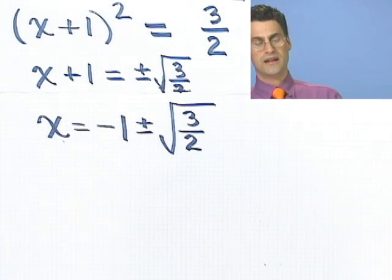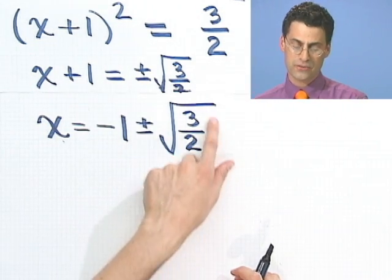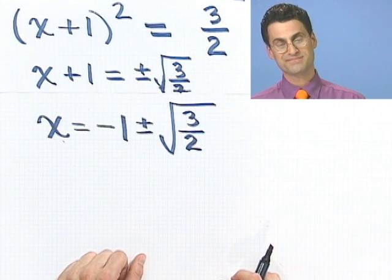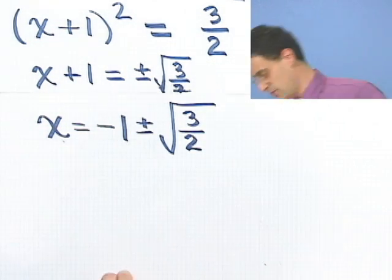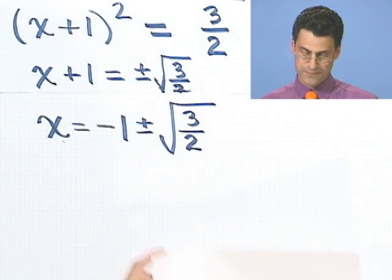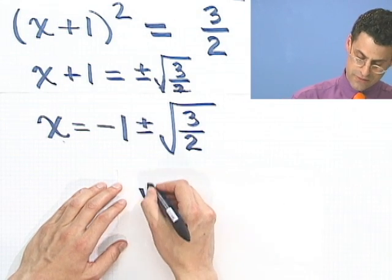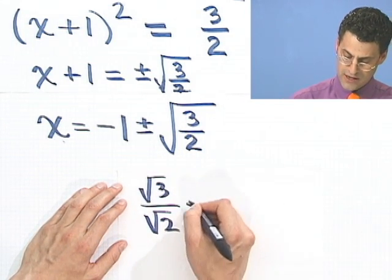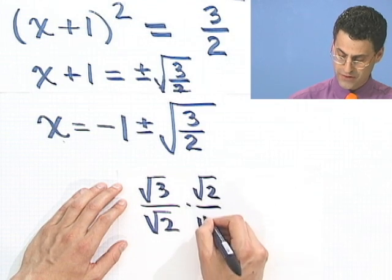Now that can't be simplified anymore, although some people might like you to rationalize the denominator. So if you want to do that, let me just show you what that would be really fast. That would be the square root of 3 divided by the square root of 2. I'd multiply top and bottom by the square root of 2.